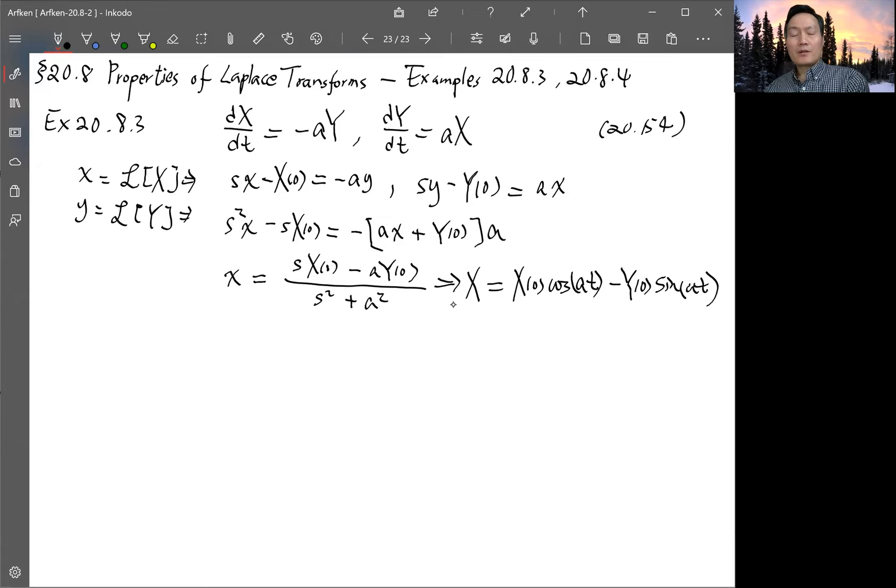So once we have that of course you can solve for y also. So y is dx/dt divided by minus A. So y is equals to minus 1 over A dt dx which is minus Ax₀ sin at minus Ay₀ cosine at.